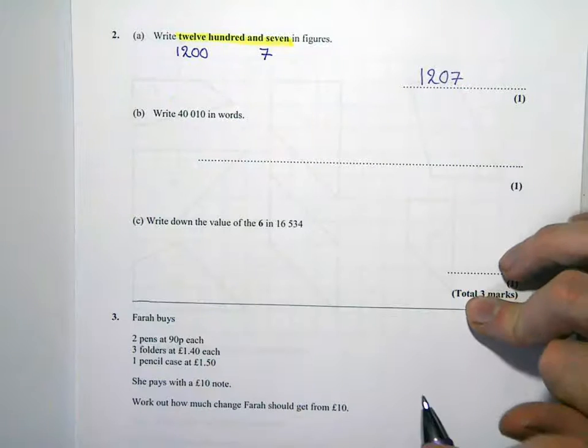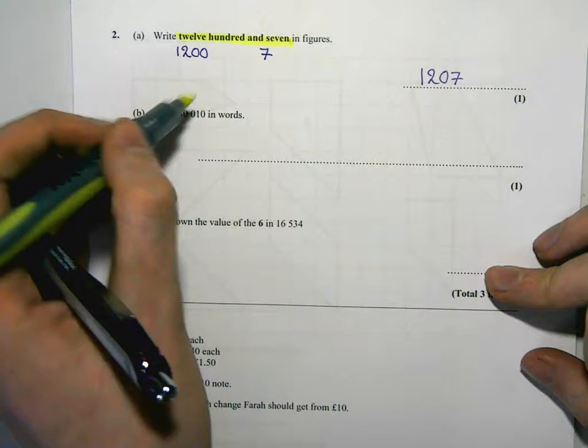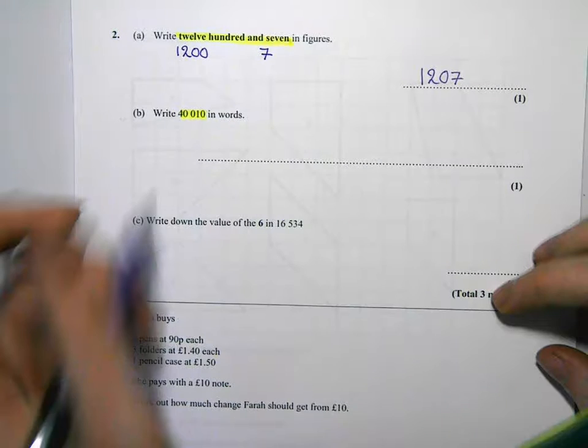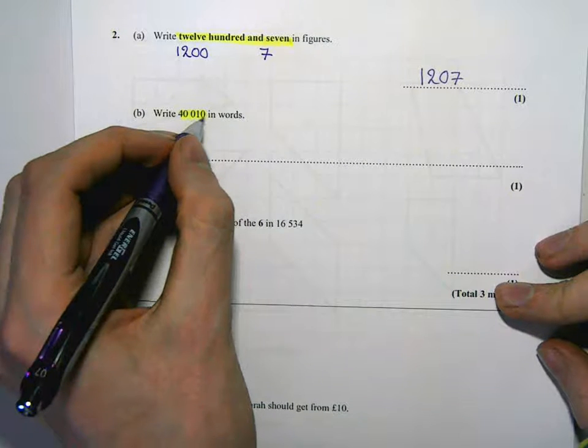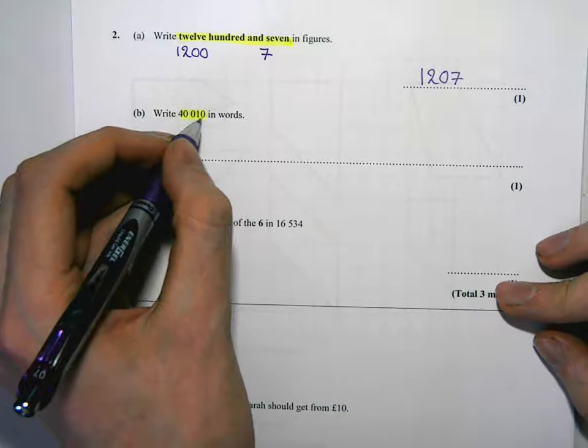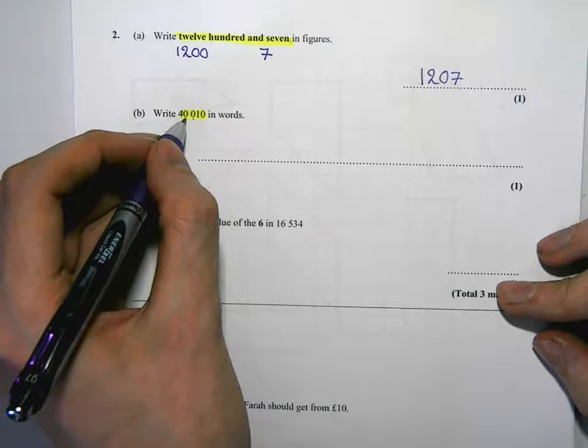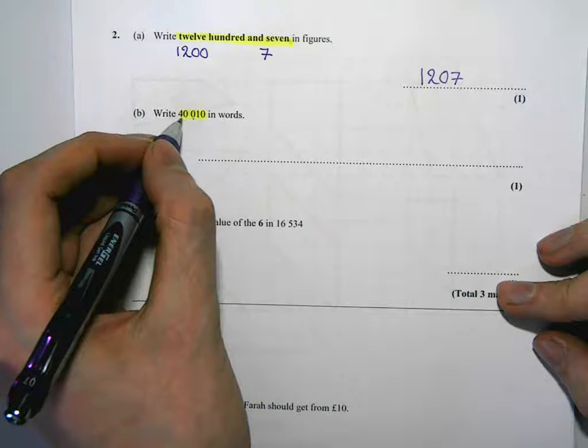The next bit, write this number in words. I always think it's useful if you count every three. We should know that's units, that's tens, that's hundreds, that's thousands, and that's tens of thousands.